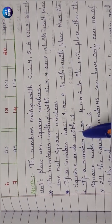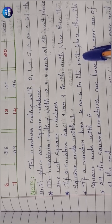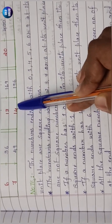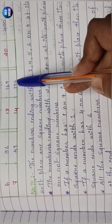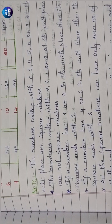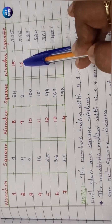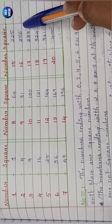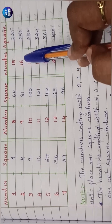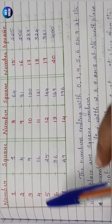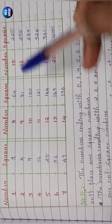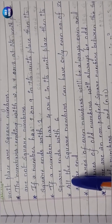The next property: if a number has 4 or 6 in its unit place, then its square ends with 6. For example, 4²=16 ends in 6, and 6²=36 also ends in 6. So when you square any number whose unit digit is 4 or 6, the result always has 6 in its unit place.